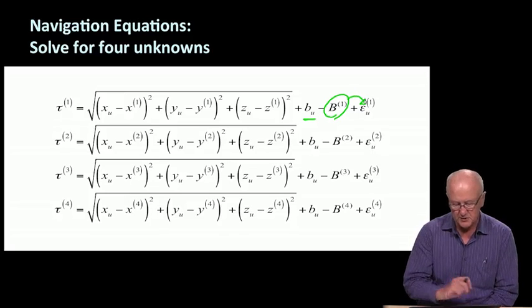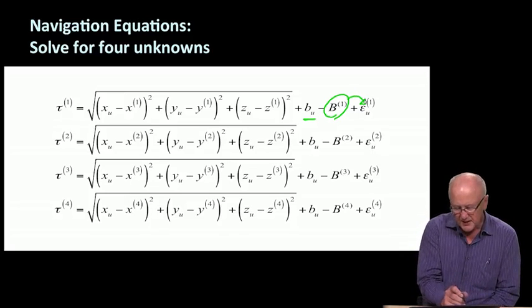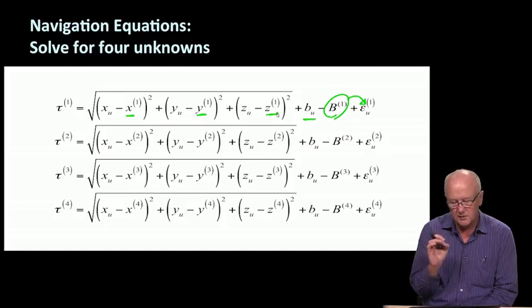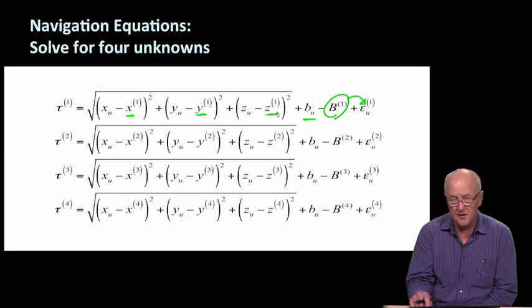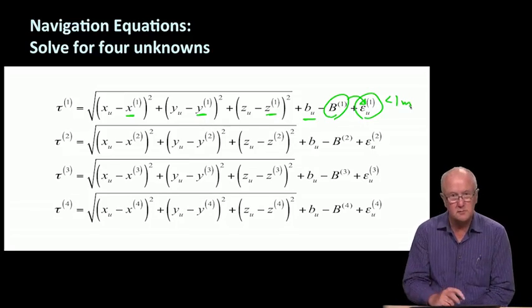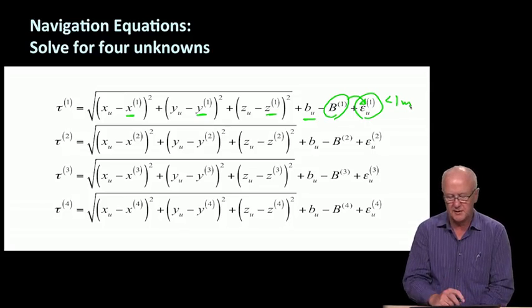This first expression means you need to know the ephemeris of the satellites very correctly—that provides x^1, y^1, z^1. You need to know the ephemeris describing the satellite clock—that's b^1. You have to manage these other errors and make them very small, less than one meter in measurement errors.